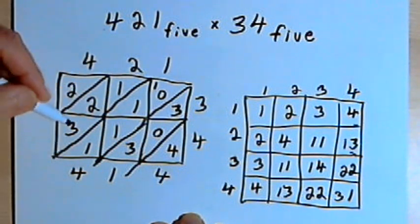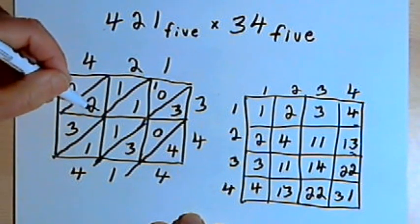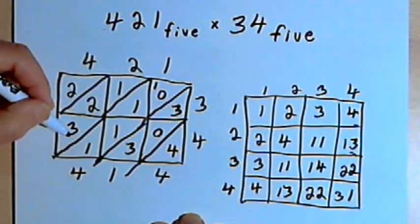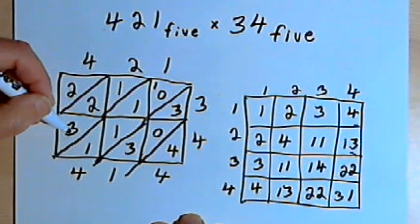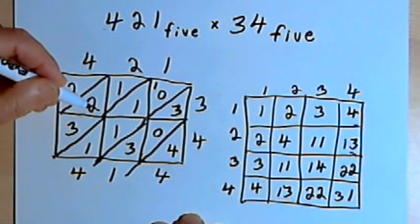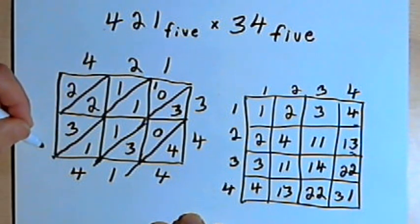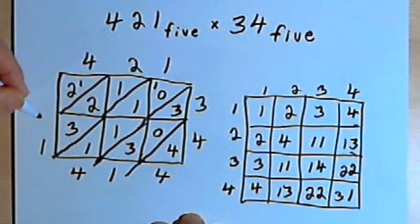No carrying here. Then I've got a 3 plus a 2 plus a 1. So let's see, 3 plus 2 more is 3, 4, 10. And then another one is 11. So I'll write a 1 and carry a 1.